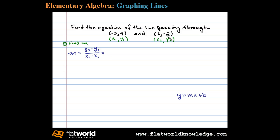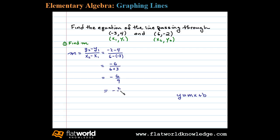Substituting in these values, we have y2 minus y1: negative 2 minus 4, divided by the difference in the x values: 6 minus negative 3. Simplifying, the numerator gives us negative 6, and the denominator gives us 6 plus 3, or 9. So we have negative 6 over 9, which reduces to negative 2 thirds. We've found the slope.